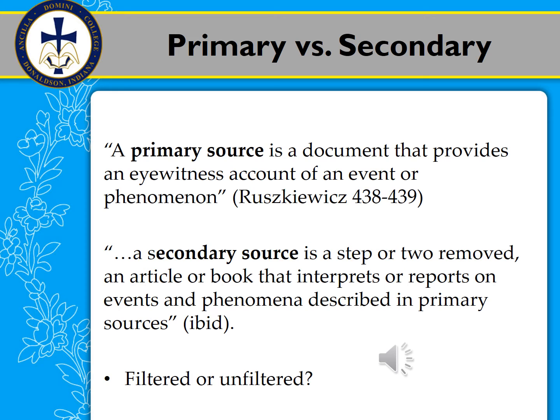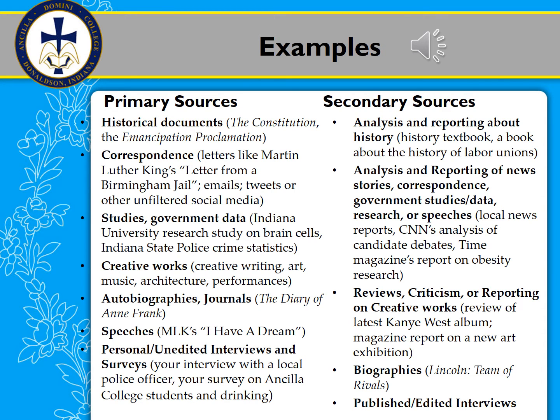In this case, a primary source is a document that provides an eyewitness account of an event or phenomenon — in other words, something firsthand. A secondary source is a type of source where you're getting the information secondhand. This would be a report about something where someone is sharing information not that they saw firsthand, but that they researched themselves. Let's look at some examples, which you can find in the Ruskowitz book on the pages shown on the previous slide.